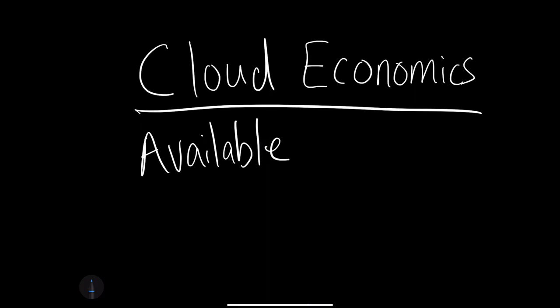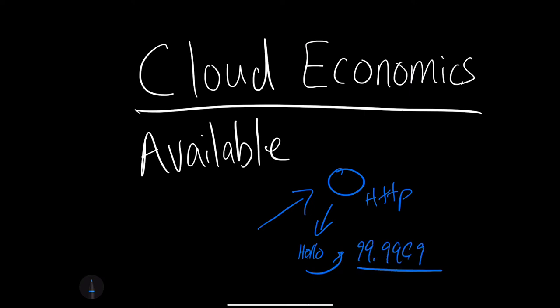Another term that comes up with cloud economics is the idea of availability. Is your website available? If I send a request, do I get a healthy response back? Is it always going to respond — at a 99.9999% reliability level — or do you have problems making your services available? With cloud services, you're using infrastructure really designed to be scalable, and it's almost impossible to build something like that on your own as an independent company, just because of the startup cost to purchase all that infrastructure.